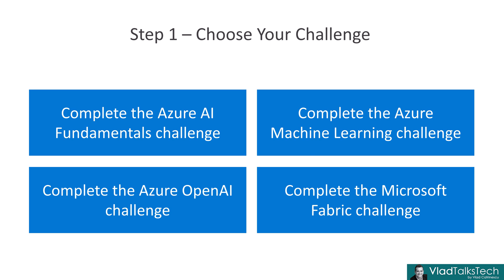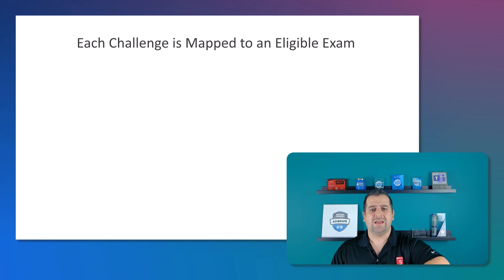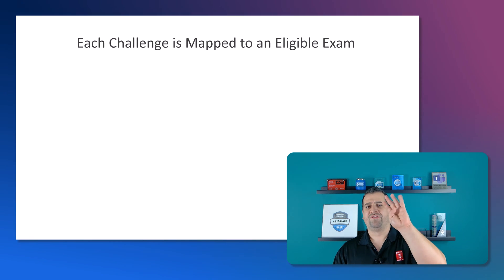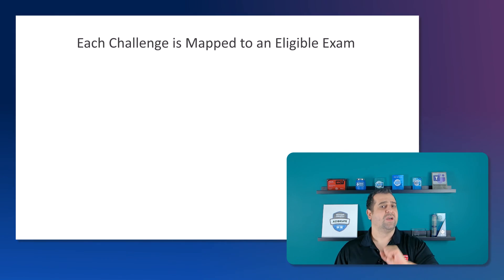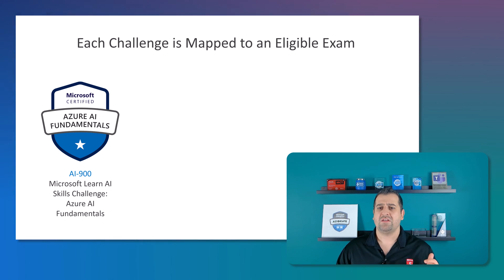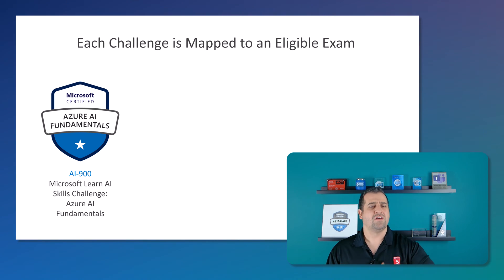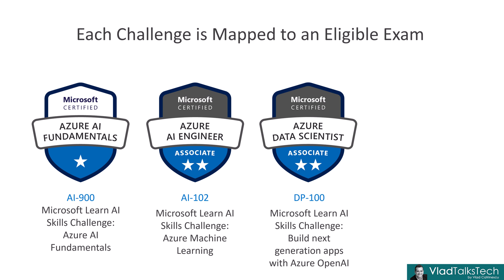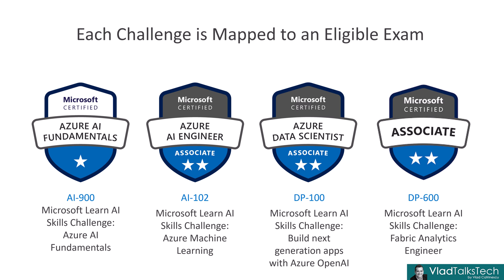You might wonder why those four challenges specifically. It's because each challenge is mapped to an eligible exam you can take after the challenge. There are four exams available as part of the offer. The first is the AI-900 Azure AI Fundamentals exam, mapped to the Azure AI Fundamentals skills challenge. Then we have the AI-102 exam to become an Azure AI Engineer, mapped to the Azure Machine Learning challenge. Third, we have the DP-100 exam to become an Azure Data Scientist, mapped to the Build Next Generation Apps with Azure OpenAI challenge. And finally, the brand new DP-600 exam, which gives you the Fabric Analytics Engineer Associate certification, mapped to the challenge of the same name.